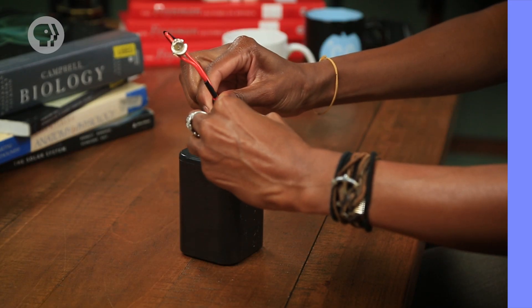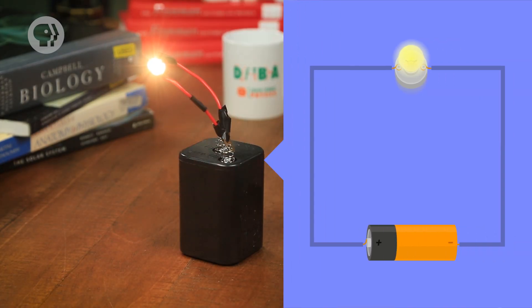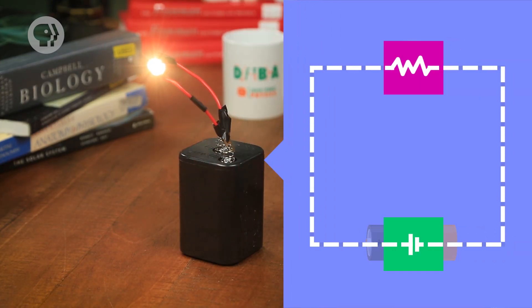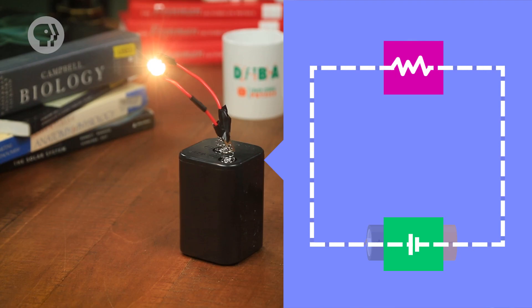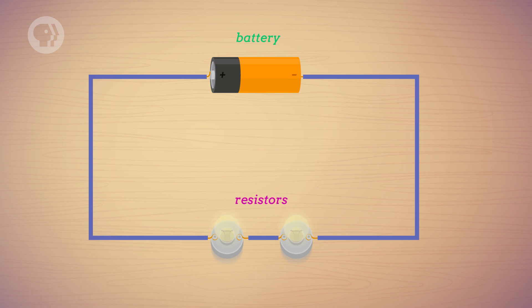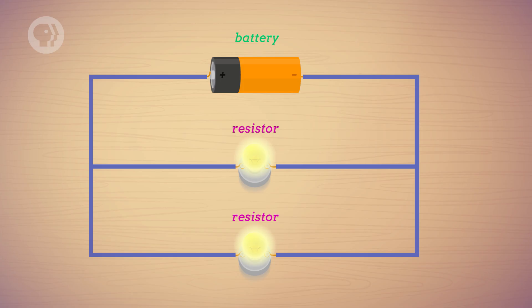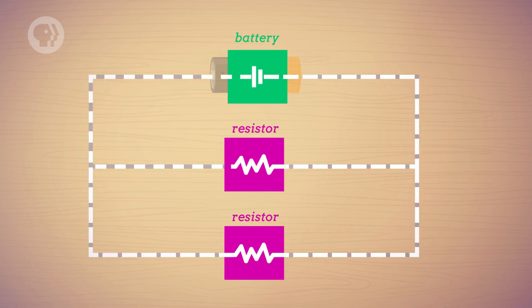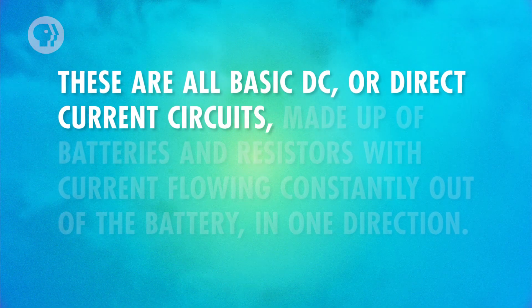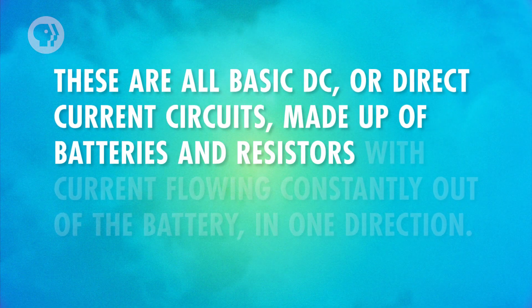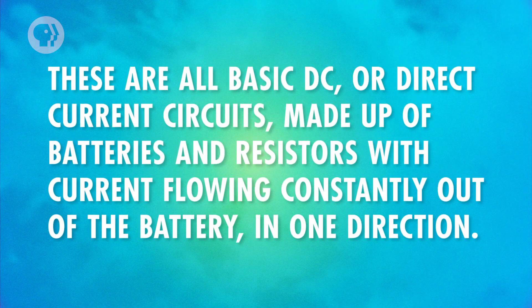For instance, in this circuit, I've got a battery connected to a light bulb. The battery provides a voltage, generating a current that runs through the whole circuit, lighting up our connected light bulb due to its resistance. Now, what if you have two identical light bulbs in a row? How will the current change? How bright will each one be? And what if, instead of two identical light bulbs on the same wire, you place the second bulb on its own wire that connects to the battery? These are all basic DC, or direct current, circuits made up of batteries and resistors, with current flowing constantly out of the battery in one direction. We'll talk about currents that aren't so constant later on, but for now everything we deal with will be a DC circuit.